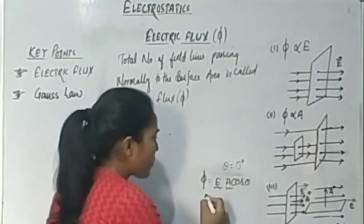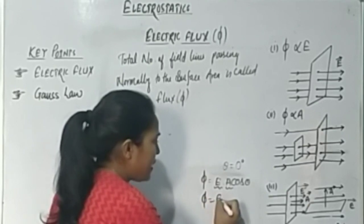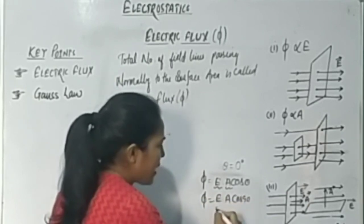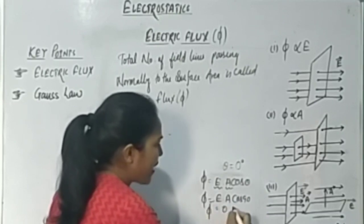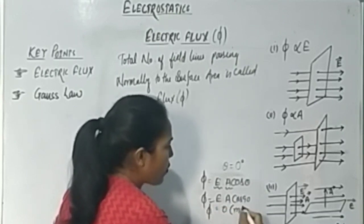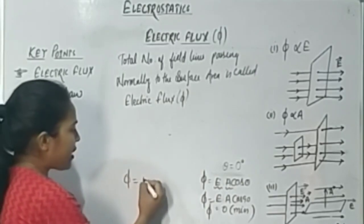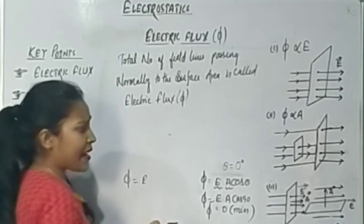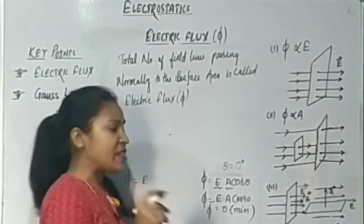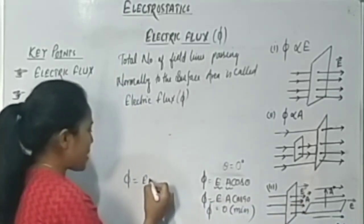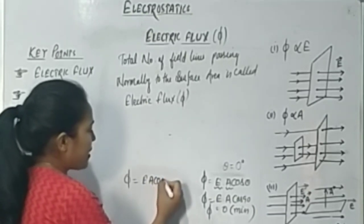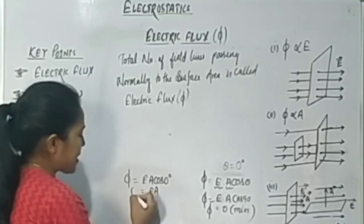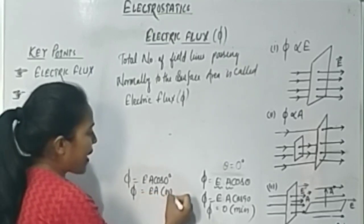The flux will be minimum when θ = 90°, because EA cos 90° = 0, so Φ = 0. The flux will be maximum when θ = 0°, because EA cos 0° = EA. So these are the two extreme cases for electric flux.